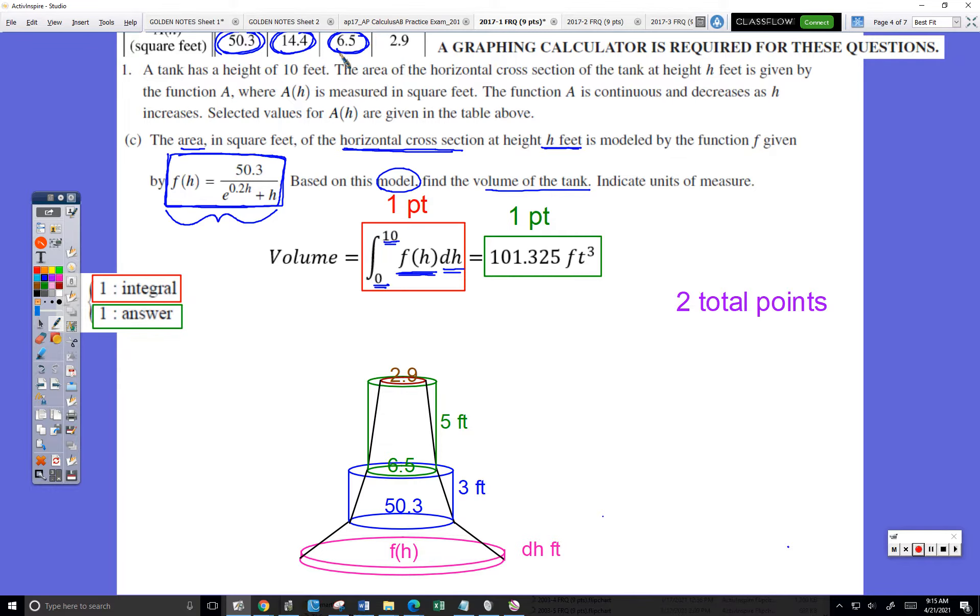So they say use this model to find the volume of the tank. Well, we always find the volume of the tank by finding the area of a cross-section and then multiplying by the thickness of the cross-section. That's how we always find the volume of anything in this class.